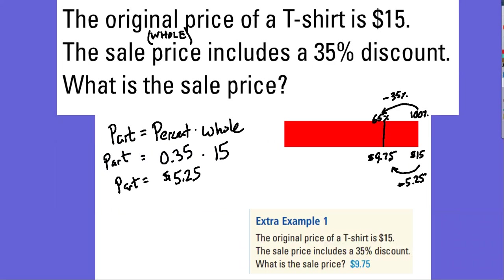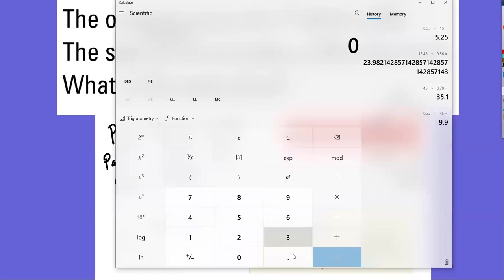Now, real quick, if you were thinking of doing this the other way, you could do it this way. Instead of saying 35% of the whole, you can say 65% of 15 will get me directly to this $9.75 because that's the portion of the item that I am paying for. So just to show that, 0.65 times 15, and there's the $9.75.